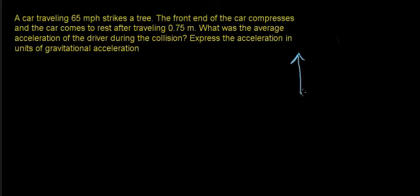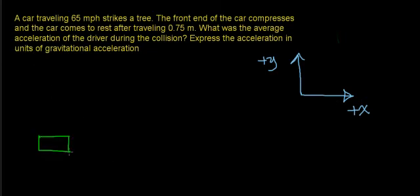The coordinate system will look like this. We'll define the positive x direction off to the right and the positive y in the straight upward direction, although we'll be looking strictly at motion in the x direction. I've defined the positive x direction to be the same direction in which the car is initially traveling.